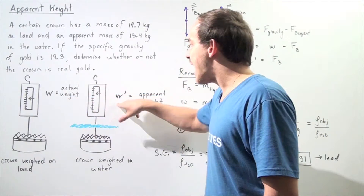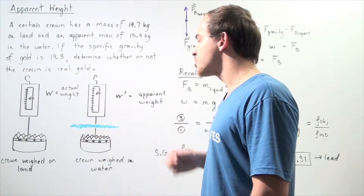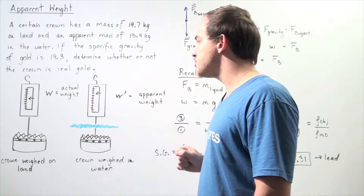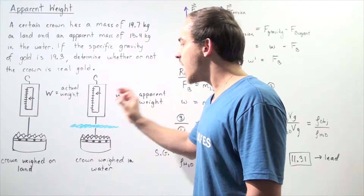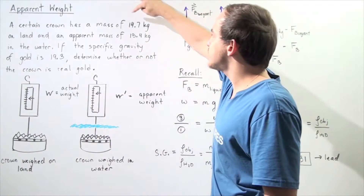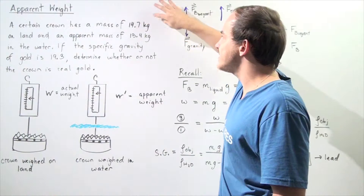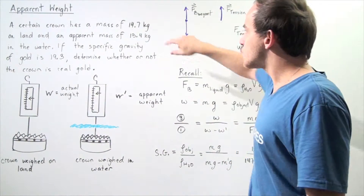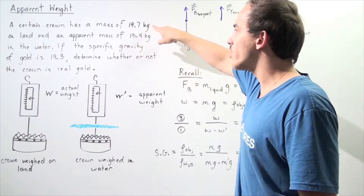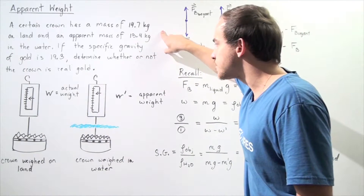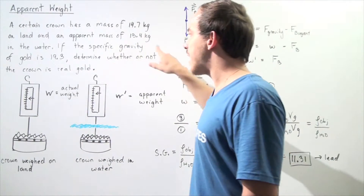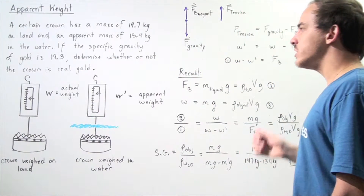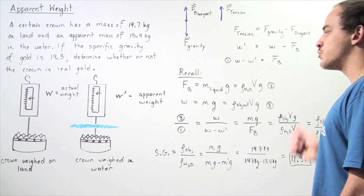Knowing these readings, we can determine the mass of each object. The mass of the object on land is 14.7 kilograms, and the mass of the object in the water drops down to 13.4 kilograms. Knowing the specific gravity of gold is 19.3, let's determine whether or not the crown is real gold.